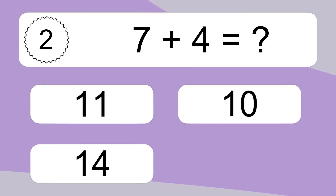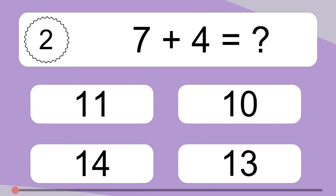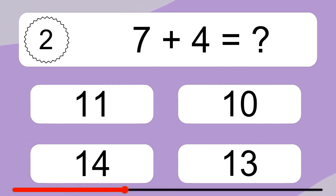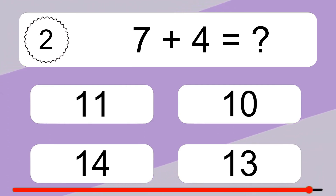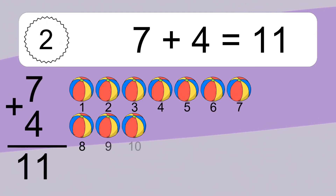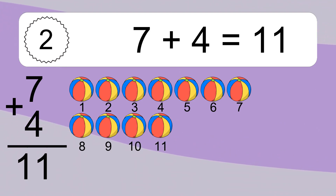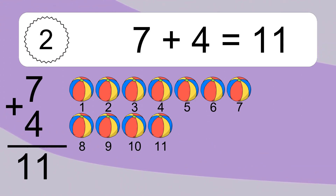7 plus 4 equals what? 7 plus 4 equals 11. Let's count it. 1, 2, 3, 4, 5, 6, 7, 8, 9, 10, 11.